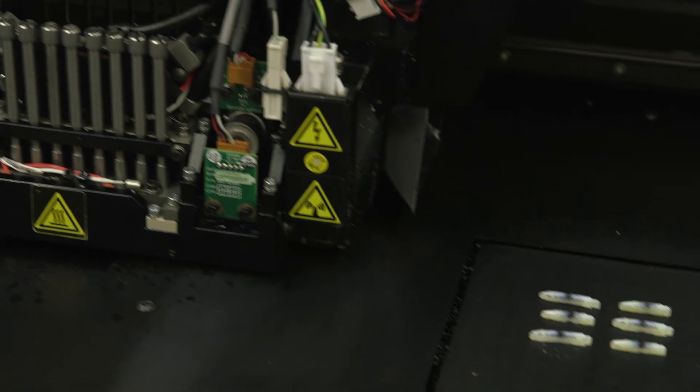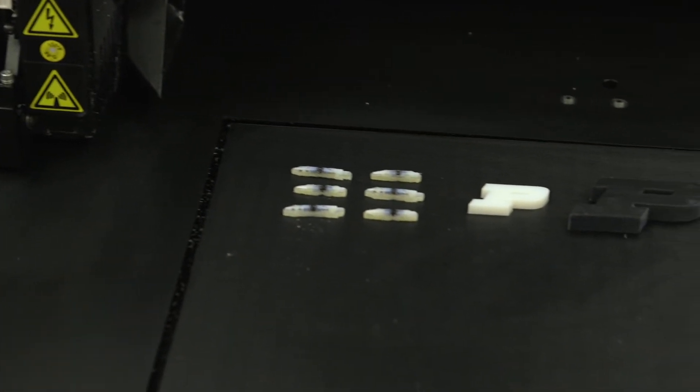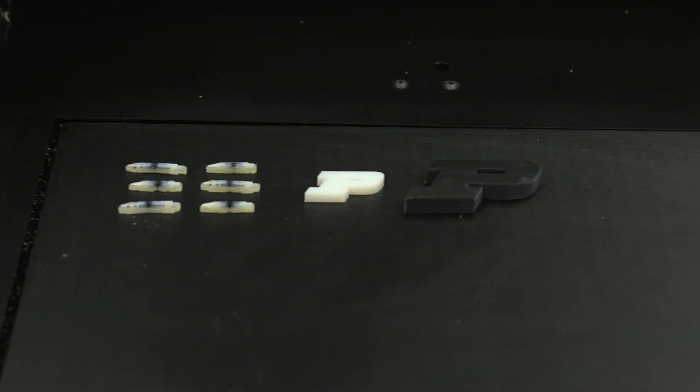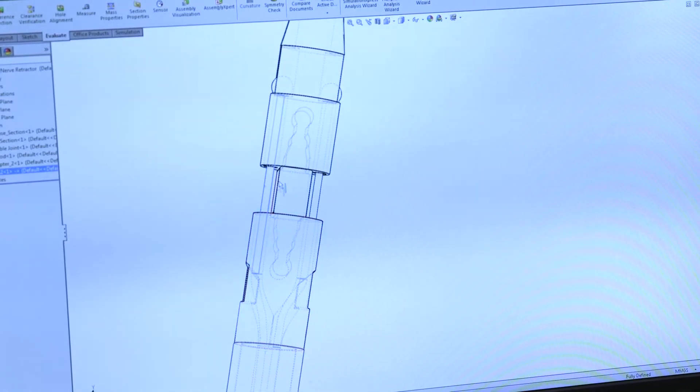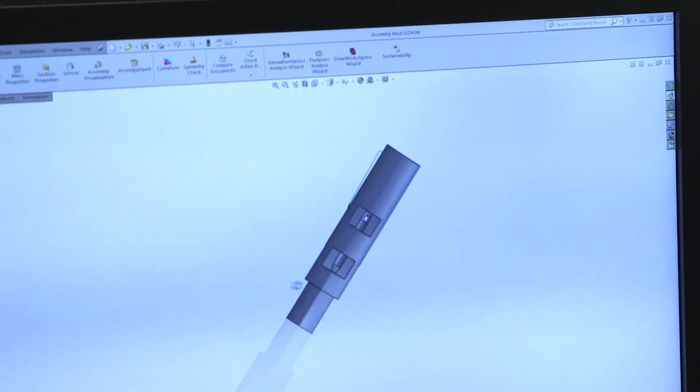Also, what is neat is we 3D print our end-effectors, our manipulators, using a new multi-material 3D printing technique so we can have rigid and flexible components so we can really shrink down very complicated mechanisms into a small workspace. They can actually be disposable and you can save a lot of costs in sterilization.